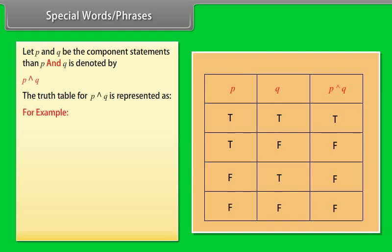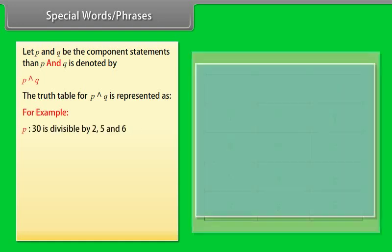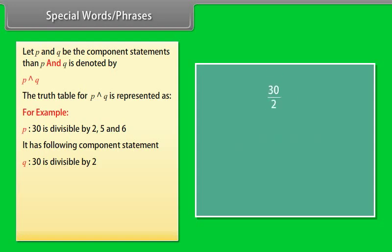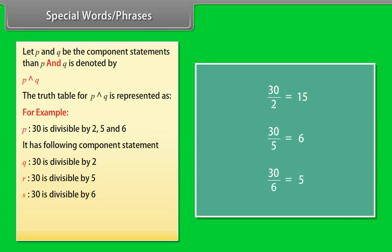For example, P: '30 is divisible by 2, 5, and 6.' Component statements: Q — 30 is divisible by 2; R — 30 is divisible by 5; S — 30 is divisible by 6. Q, R, and S are all true statements, and therefore P is also a true statement.